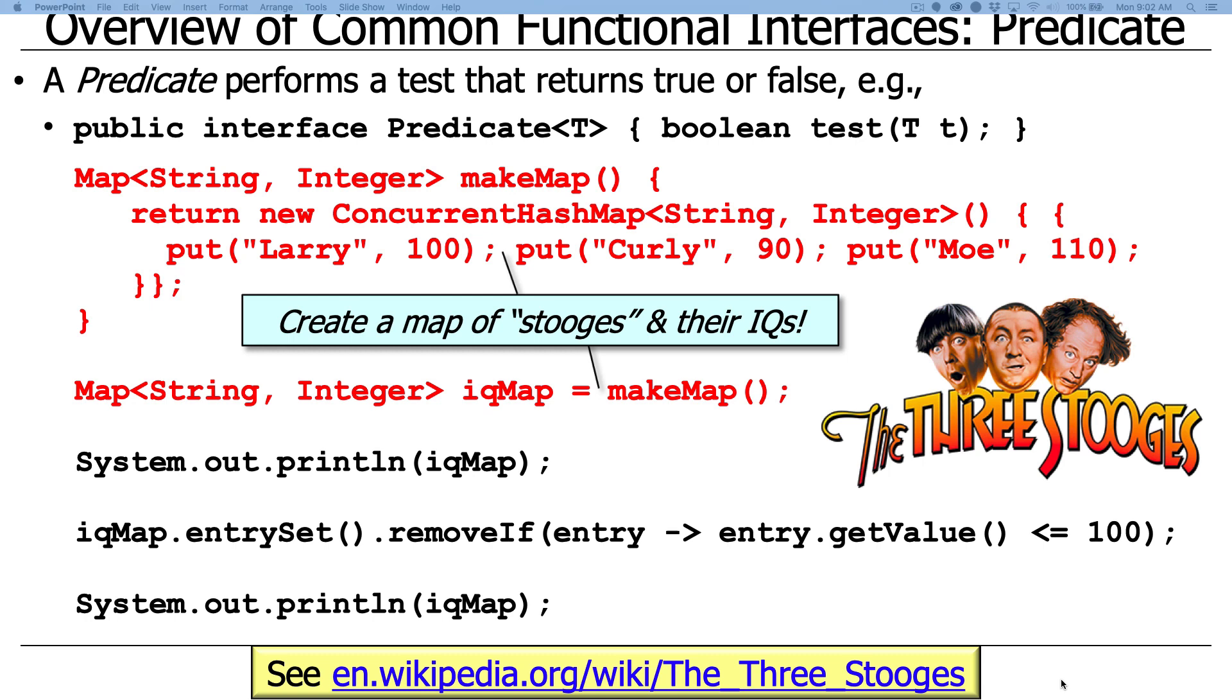And just for kicks, because it's fun, I use an example where we're going to make a concurrent hash map that's going to map the names of the Three Stooges, Larry, Curly, and Moe, along with some hypothetical, whimsical estimation of their IQ.